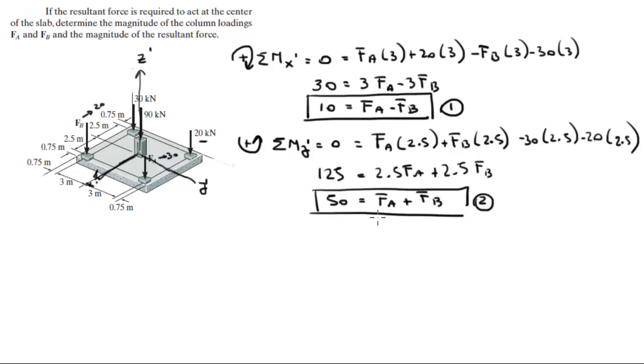Let's call this equation 2. I'm just going to rewrite equation 1 right below equation 2: 10 equals FA minus FB. I'm going to add them together and the FB cancels out and you get that 60 is equal to 2 FA, and FA is equal to 30 kilonewtons. As I told you, FA is equal to 30, original prediction.